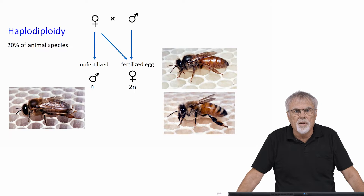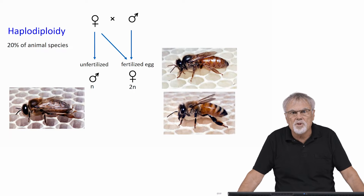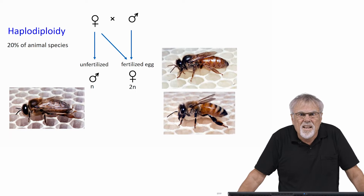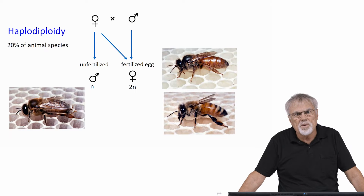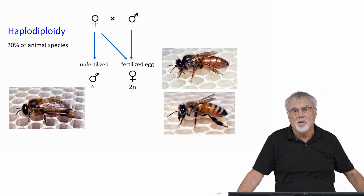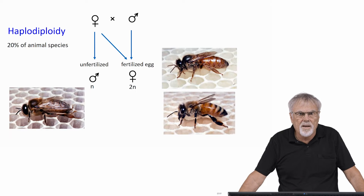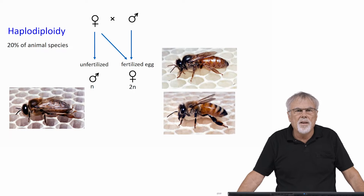Honeybees have a haplodiploid mechanism of sex determination. Haplodiploidy is not rare — about 20% of all animal species have this particular kind of sex determining system. As you can see in the figure, females are derived from the egg of the mother and the sperm of the father, and they have two sets of chromosomes. Males only have one set of chromosomes — the set they inherited from their mother. The male phenotype is shown on the lower left, and females on the right can either be queens or workers depending upon the nutritional feeding program they receive while developing.